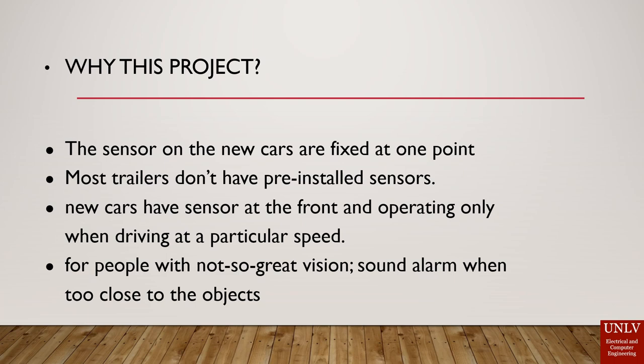There are a lot of trailers out there that don't have installed sensors, and there are also some cars that have installed sensors but they are only fixed in one point and can show only one direction. Having these kinds of sensors means they can be used in trailers to show what's around them, and also with vehicles that already have sensors but those are fixed.